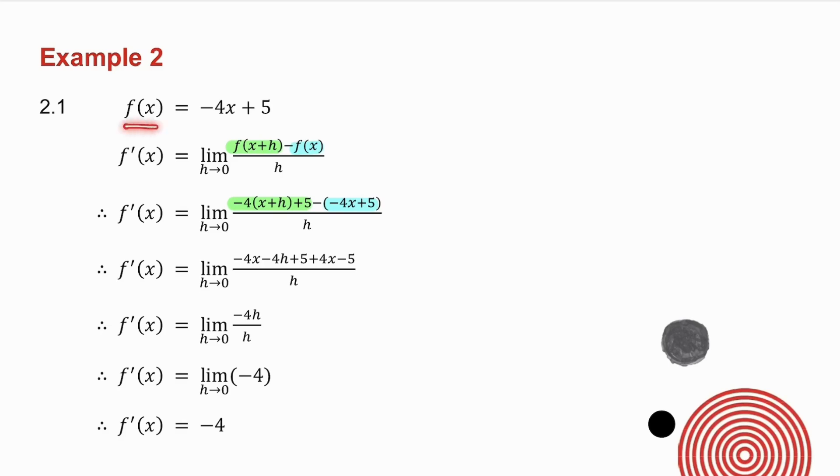Now let's think about this a little bit. What kind of graph is f of x equals minus 4x plus 5? It's a straight line graph. What is the gradient of this straight line graph? It's minus 4. And we know that because the general equation of a straight line graph is y equals mx plus c, and the gradient is m. When working out the derivative, in other words the gradient from first principles, what did I get for the gradient? Minus 4.